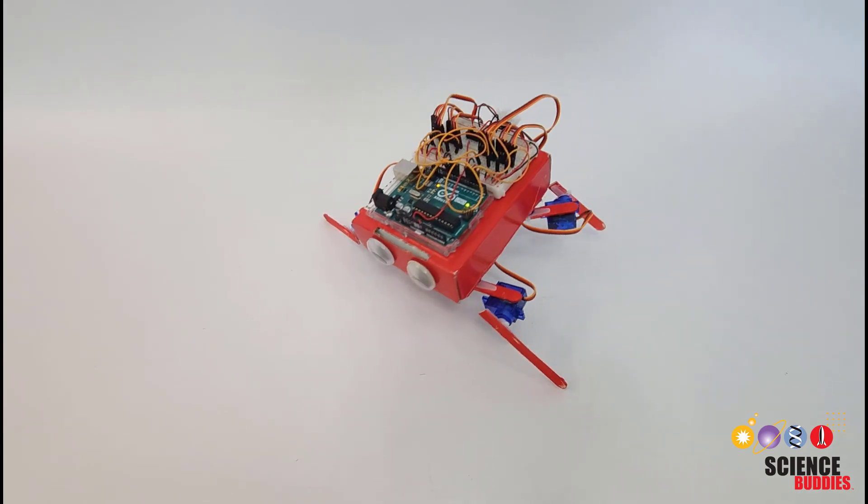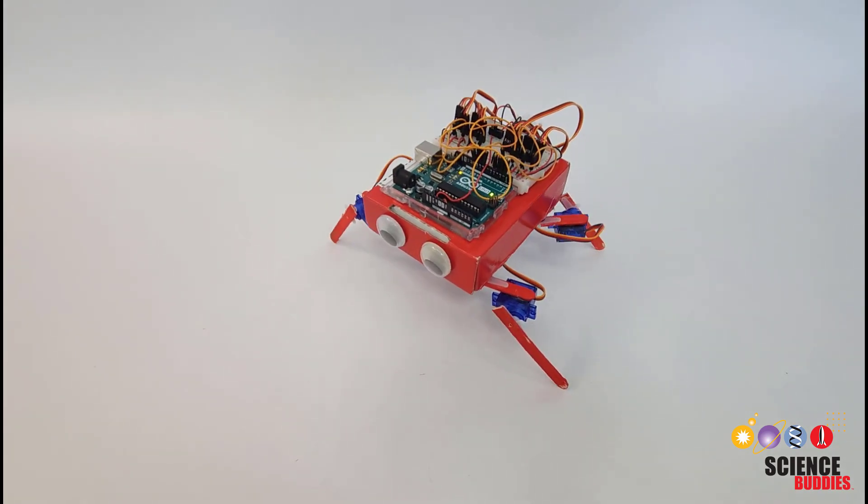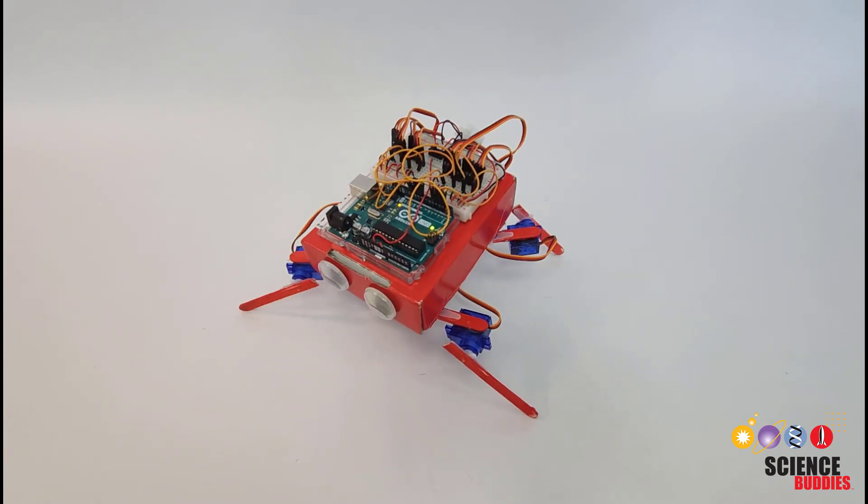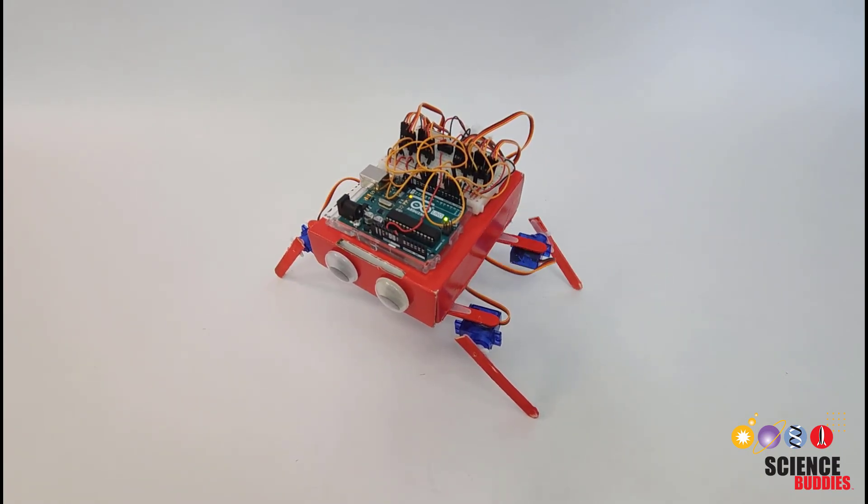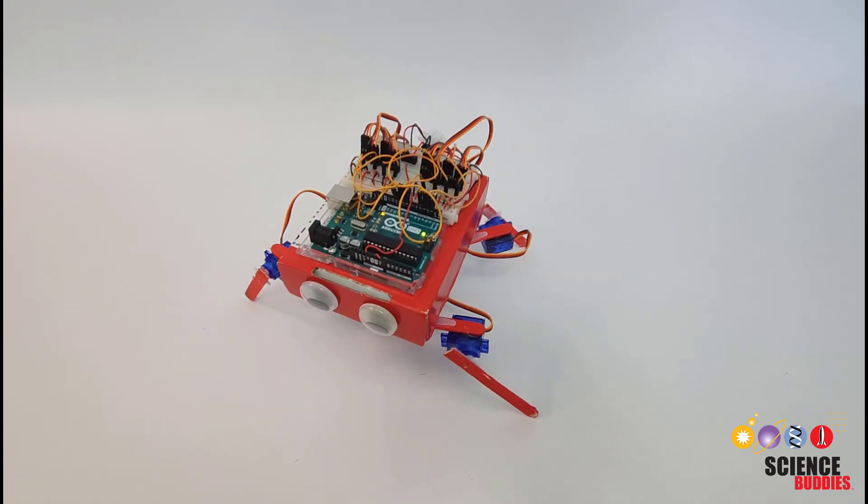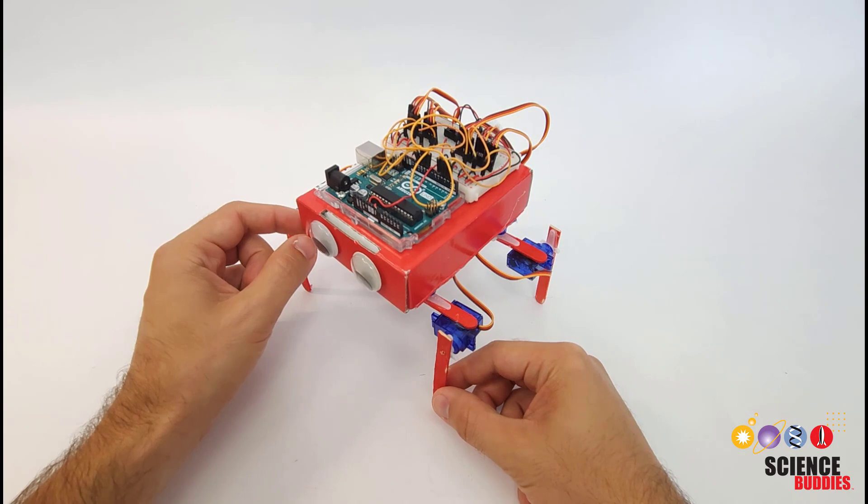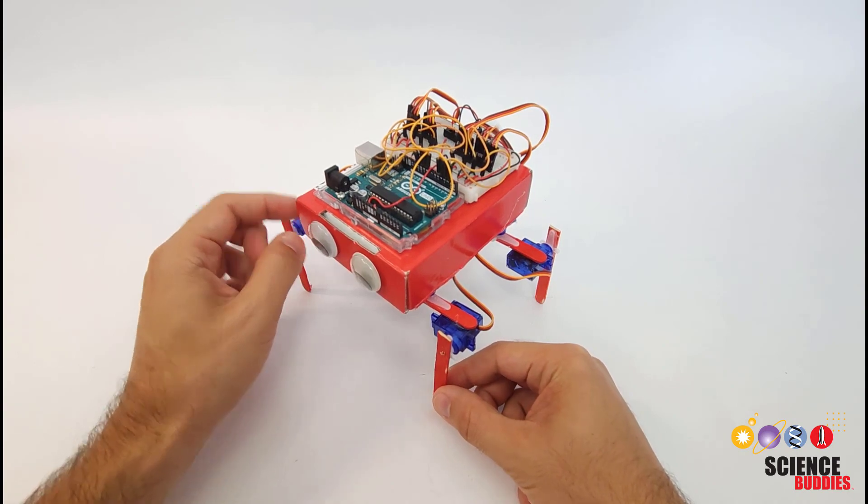So we haven't changed the hardware at all, we have just changed the software or the code that's controlling the gait and if you're doing this for science or engineering project you can compare these different gaits to see how fast the robot moves. You can also change the angles through which all the joints move in addition to their order.